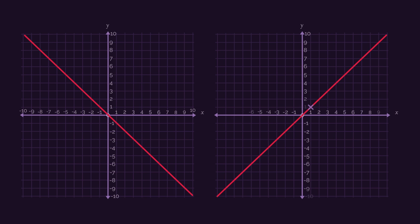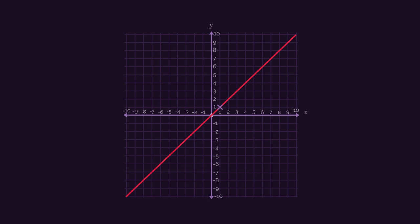Notice the coordinates on this line. So when x is 1, y is 1. And when x is 4, y is 4. The x and y coordinates are always the same. This means the equation of the line is y equals x.